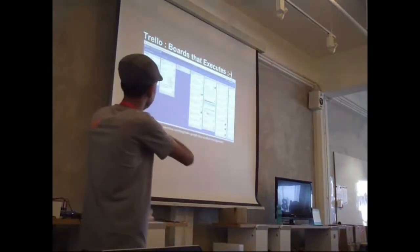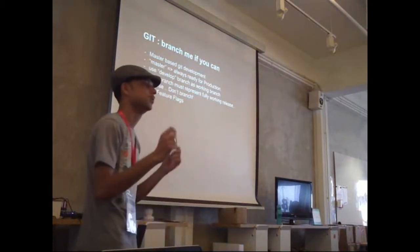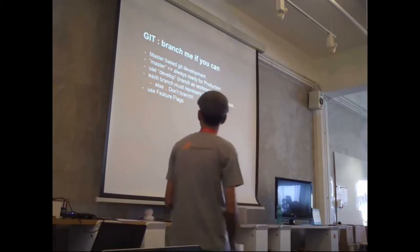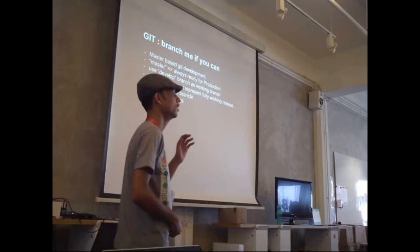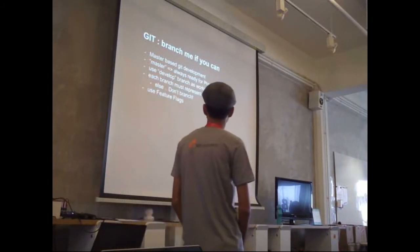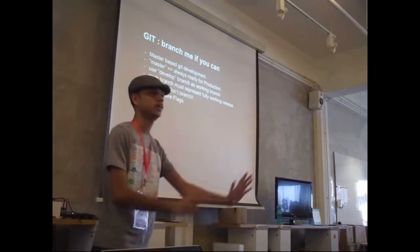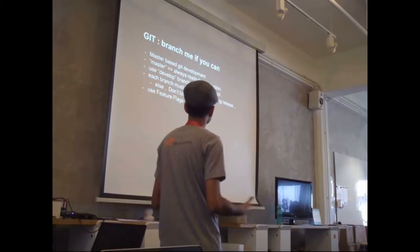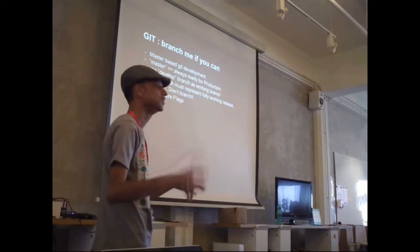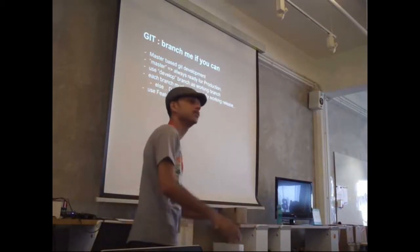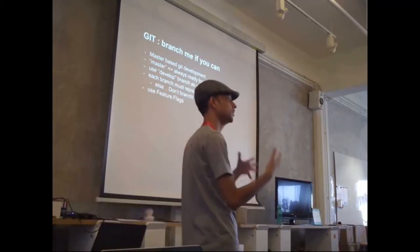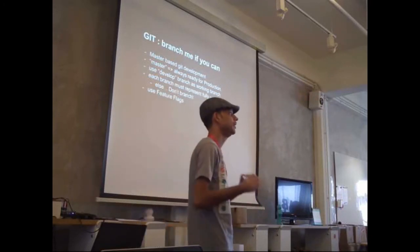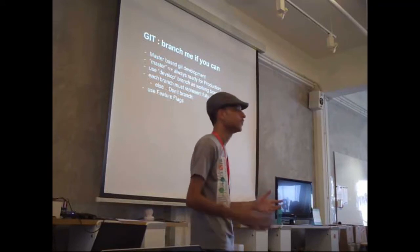This concludes the planning and execution part. I'm going to talk about a lot of small stuff that you already know about and how we use it. Git and Git branches, everybody is aware about branches and all that stuff. We try to simplify things. We use master-based Git development. That means master is always ready for production. What goes into master is exactly production-ready. We generally do branches for working branches and master.